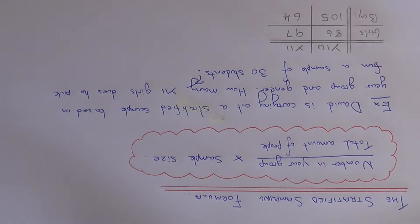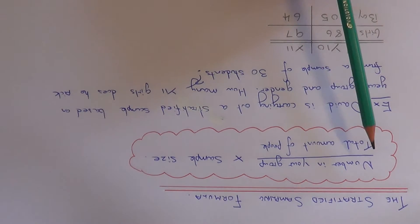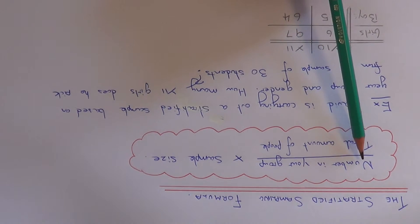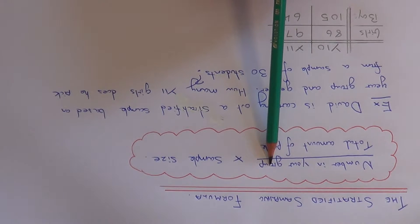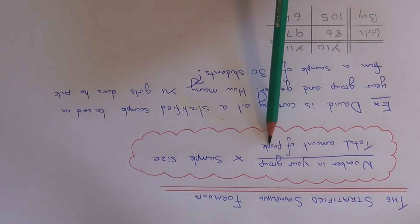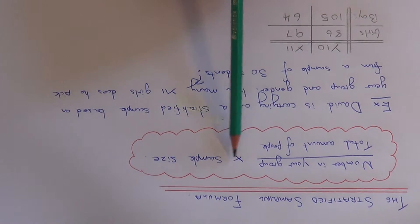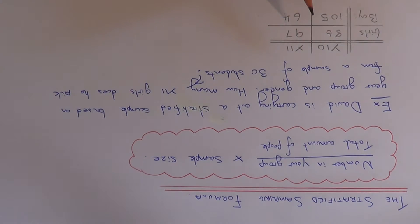In order to do this, you will need to know the formula for working out the number of people that you pick. The formula is: the number in the group that you are working out divided by the total amount of people, then multiply this by the sample size.